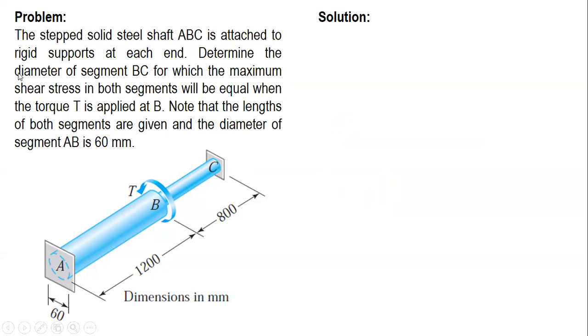Note that the lengths of both segments are given and the diameter of segment EB is 60 mm. So what is asked here is the diameter of segment BC. The condition is the maximum shear stress in both segments will be equal.